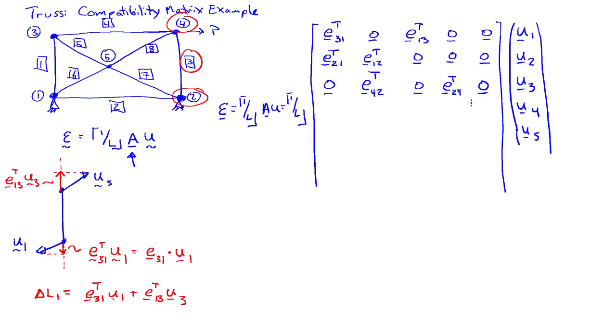And if we go to bar 4, that connects nodes 3 and 4. So 0, 0, and then E43 transpose and E34 transpose.